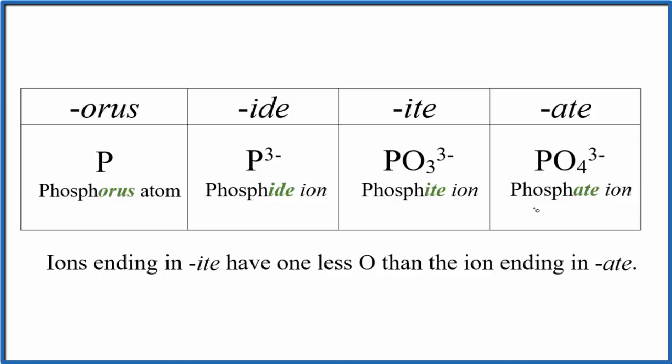So the first thing we'll look at is phosphorus. This is the phosphorus atom, it's just P, and this is how we find it on the periodic table. It's a neutral atom, it doesn't have a negative or positive sign after it. That's the phosphorus atom found on the periodic table.